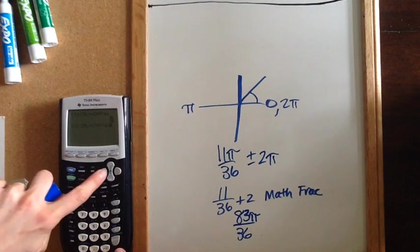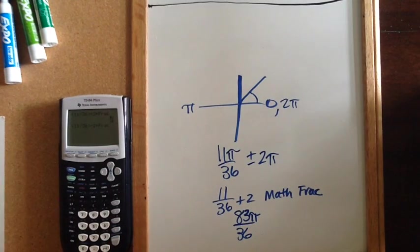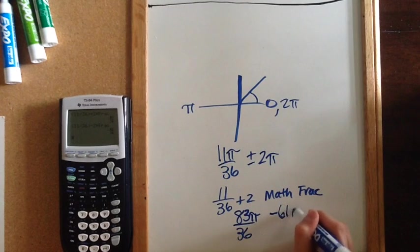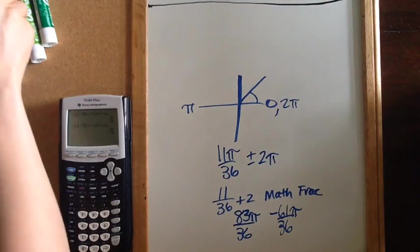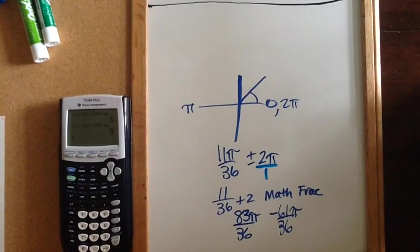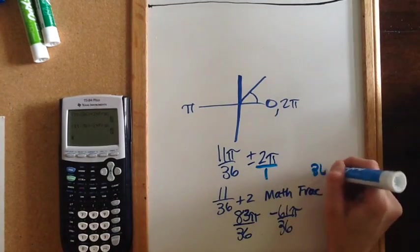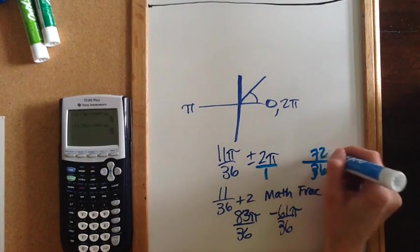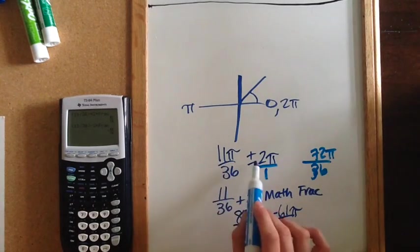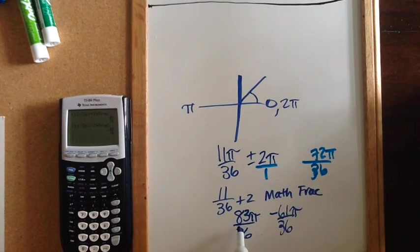So then I'm going to hit second enter, and I can just go back and hit subtract 2, and I get negative 61π/36. So your calculator actually is super helpful on this so that you don't have to find a common denominator. I could find that this 2π is really over 1, so my common denominator would be 36, and then I would have to double 36 to get to 72, so this would be 72π/36, and then I'd do 11 plus 72, which would give me the 83, and 11 minus the 72, which would get me to the negative 61π/36.